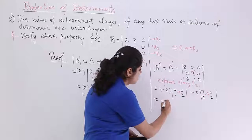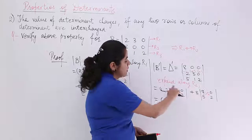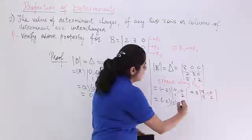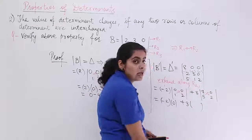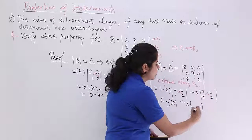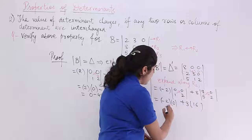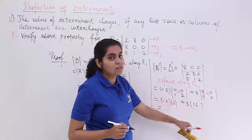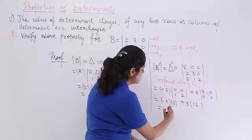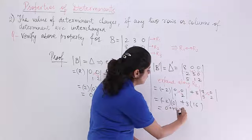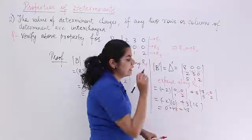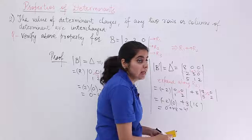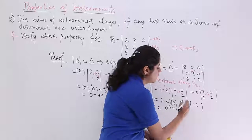Minus 2 is outside: cross-multiplying 0×2 = 0 and 0×1 = 0, so that is 0. For plus 3: cross-multiplying 8×2 = 16 minus 0×5 = 0, giving 16. So 3×16 = 48. The result is 0 plus 48, giving 48 as the answer.